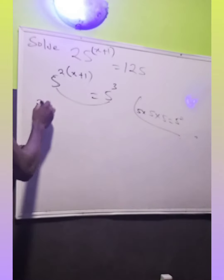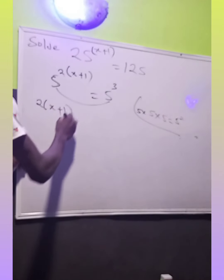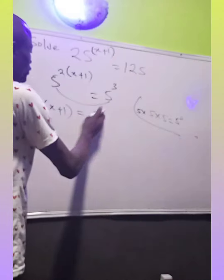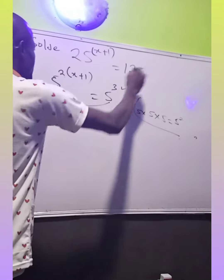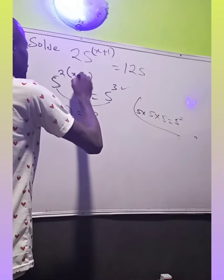The powers become 2 open bracket x plus 1 equals to what? 3. Because the power here is 3. And look at the power here. We have the power here.